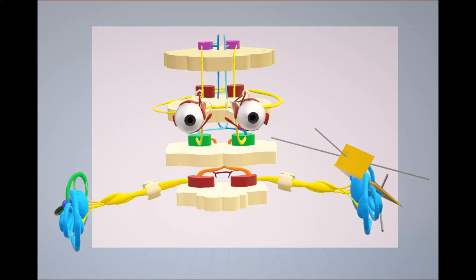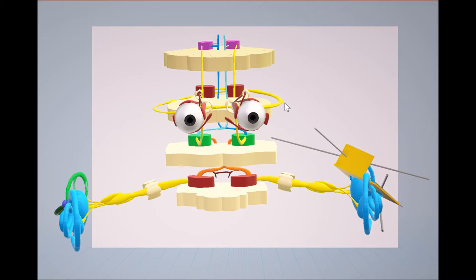The vestibular system is enticingly fascinating mainly because of its complexity and because of its essence for our quality of life, even though the organs that make it possible are so small. The vestibular system basically operates through three reflexes: the vestibuloocular reflex, the vestibulocolic reflex, and the vestibulospinal reflex. Each aims to stabilize our body and our eyes, allowing us to stay in motion effectively.